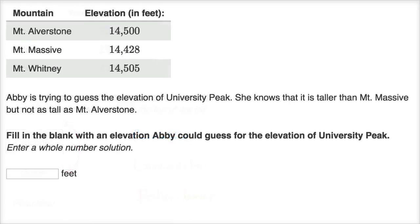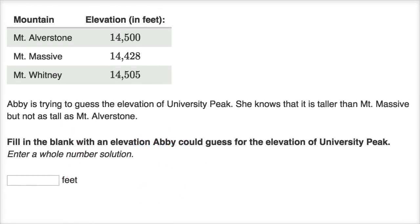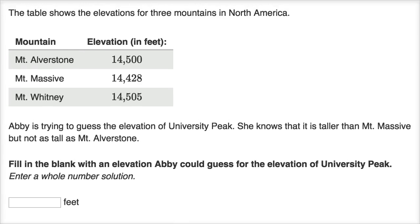Let's do one more. The table shows the elevations for three mountains in North America. Abby is trying to guess the elevation of University Peak. She knows that it is taller than Mount Massive but not as tall as Mount Alverstone — so it is between Mount Alverstone and Mount Massive. Fill in the blank with an elevation Abby could guess. We just have to think of a number that is larger than 14,428 and smaller than 14,500.